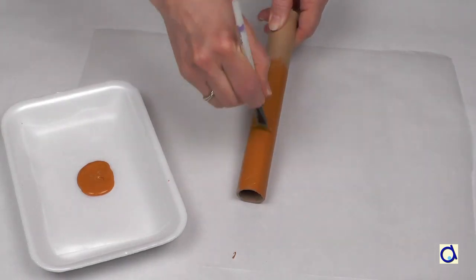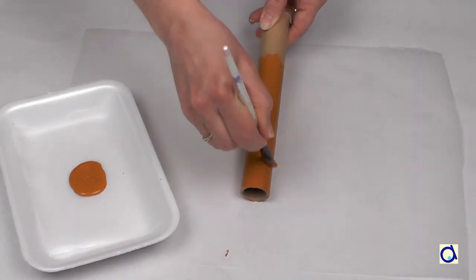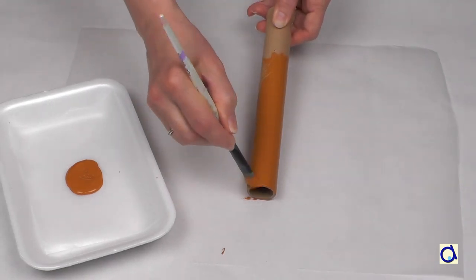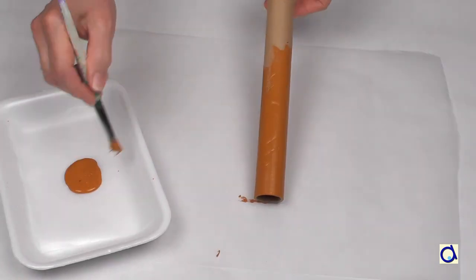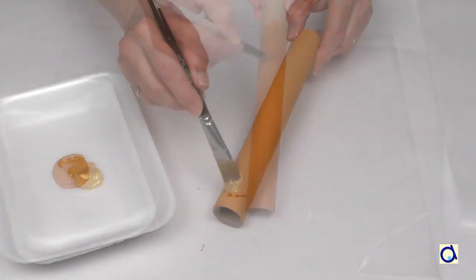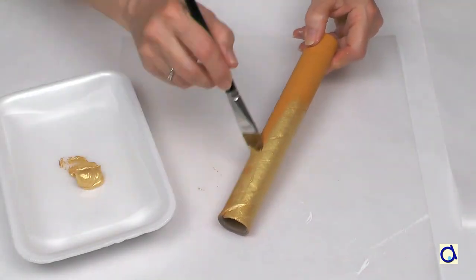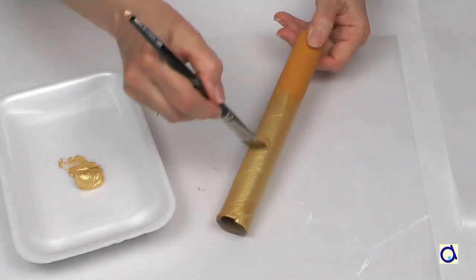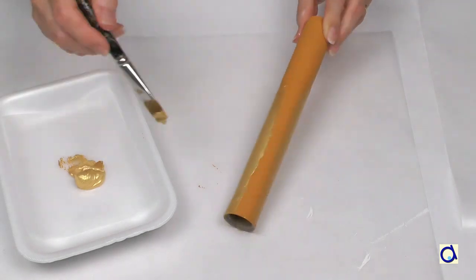If like me, you want a golden torch, here is what I suggest you do. Since gold paint is rather transparent, first put a coat of ochre paint. When the ochre paint is dry, put one or two coats of gold paint. Let dry.